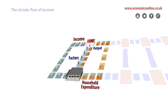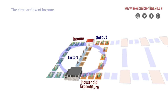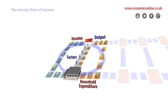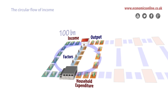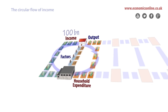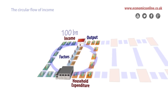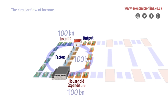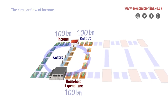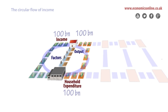Income circulates continuously between households and firms. The monetary value of income, expenditure, and output should equate. For example, if factors together earn 100 billion units of currency as income, and assuming they all spend their income, the value of household expenditure and firms' output is also 100 billion.